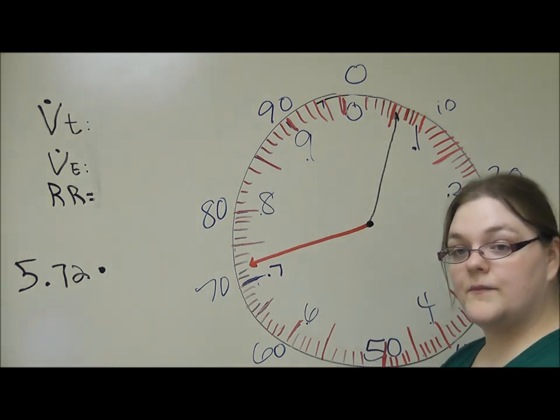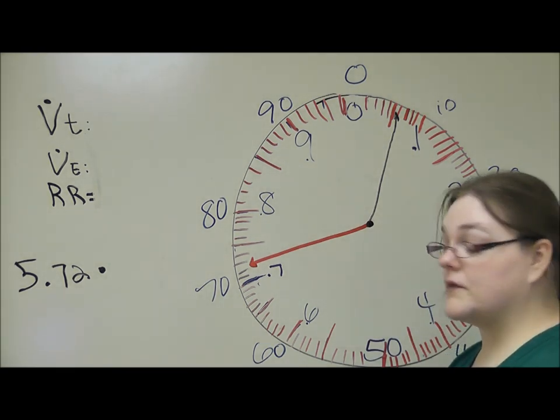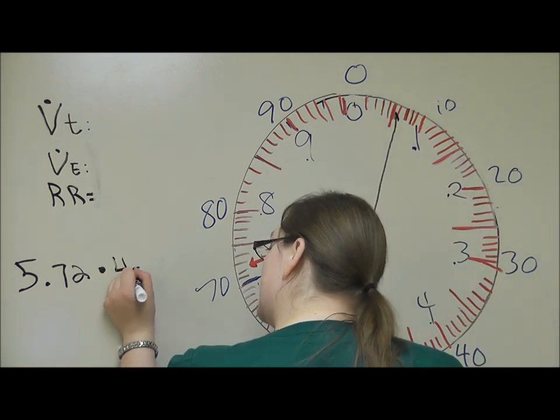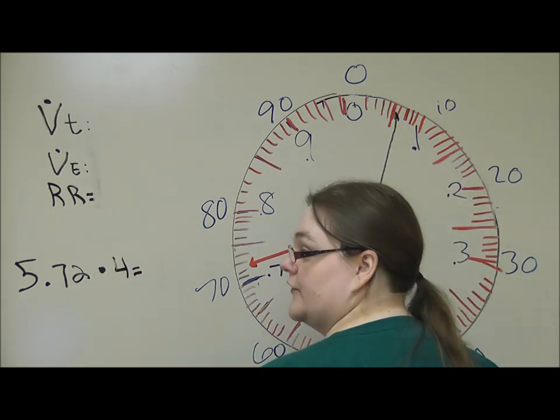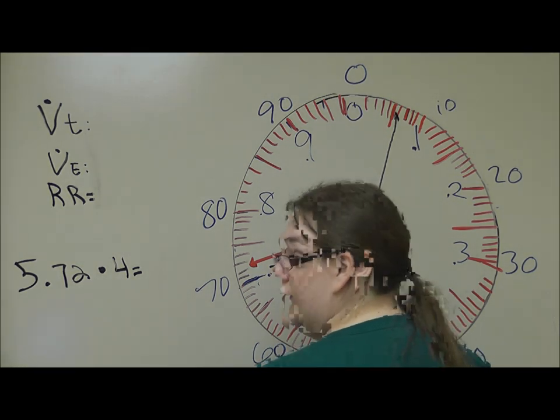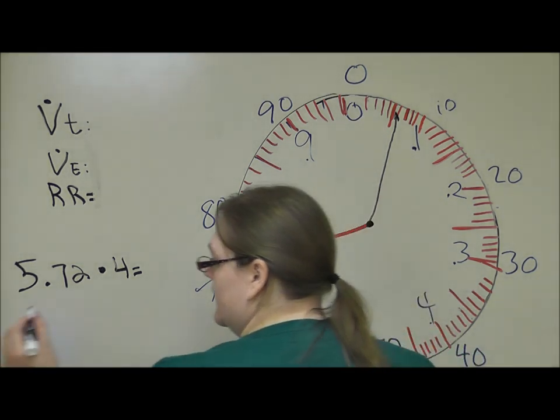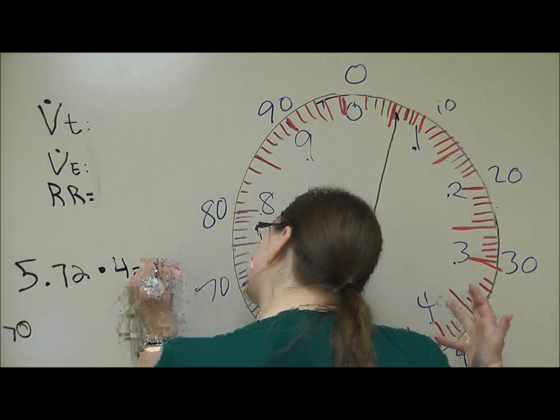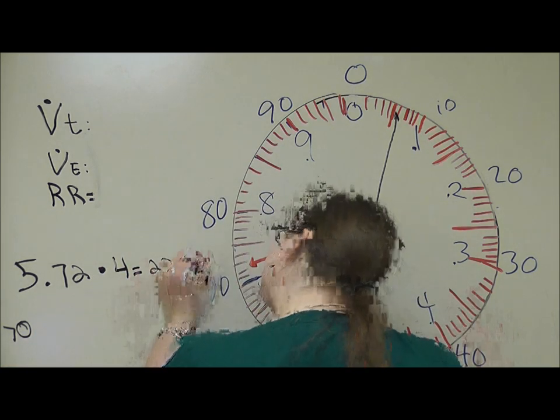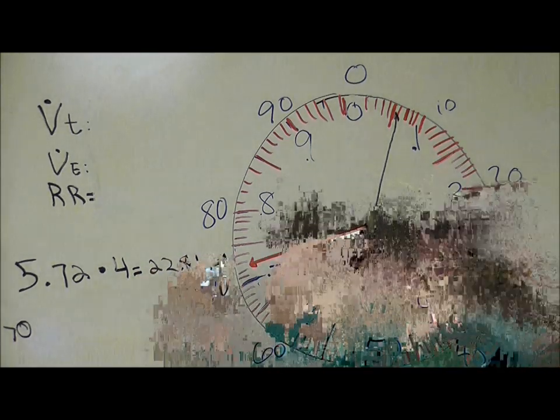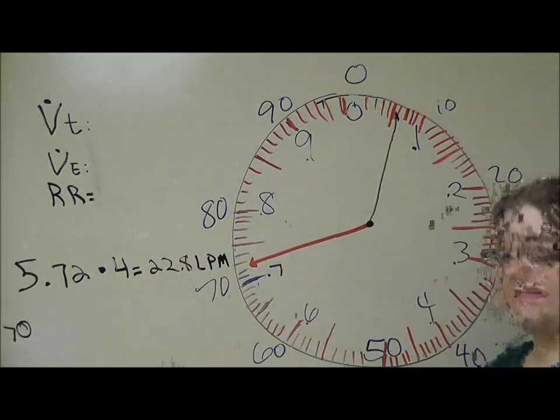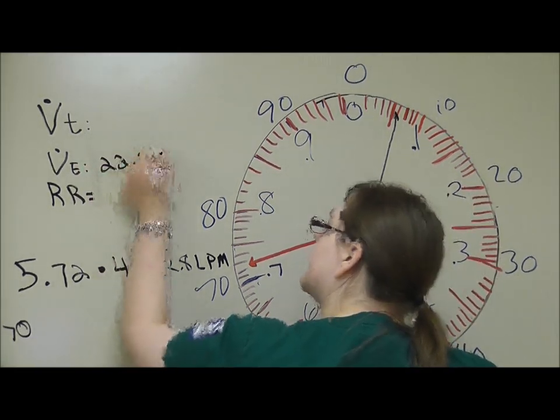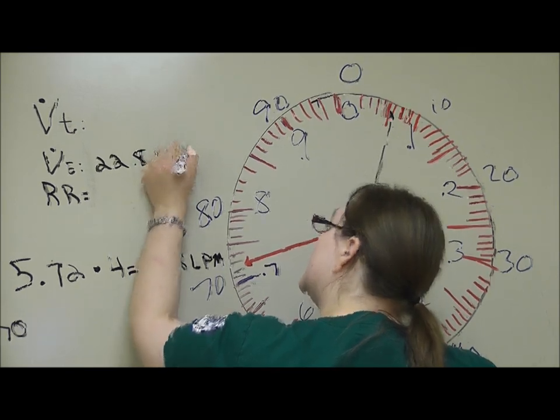And because I did my breathing for 15 seconds, I'm going to multiply this number by 4. Naturally, I've come up with quite an awkward number to do in your head. So 5.7 times 4 equals 22.8 liters per minute. That is my minute volume, which we're going to put right up here. 22.8 liters per minute.